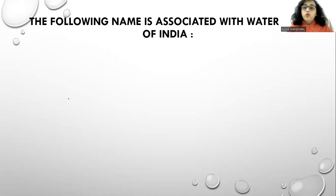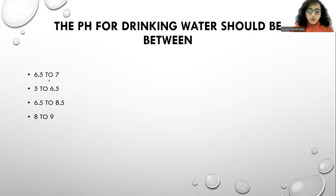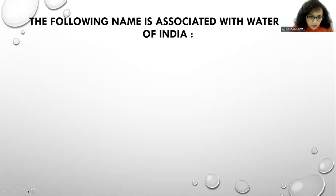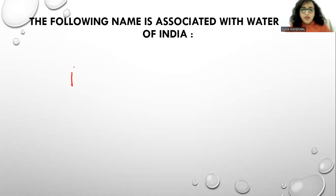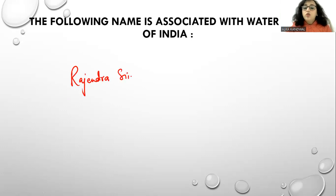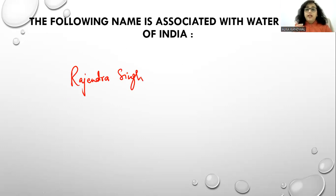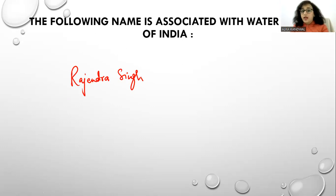The name associated with the 'Water Man of India' is Rajendra Singh. He was a conservationist from Rajasthan. Many areas in Rajasthan had been abandoned due to water scarcity, and he used traditional techniques to store water, making those areas liveable again. So Rajendra Singh is known as the Water Man of India.